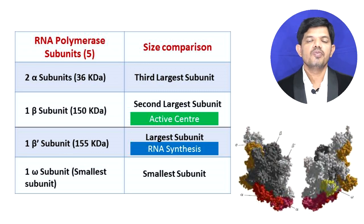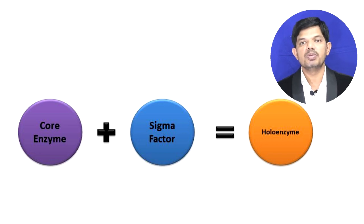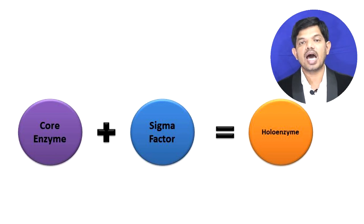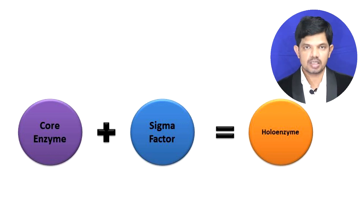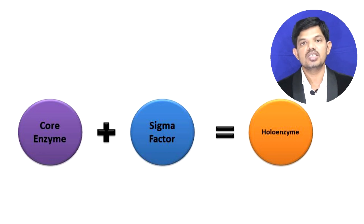These five different subunits form the core enzyme, and this core enzyme binds with a sigma factor to form the holoenzyme. The sigma factor helps during binding with the promoter region. Without the sigma factor, RNA polymerase cannot bind with the promoter region and therefore cannot start transcription. That is why the sigma factor is also known as the initiation factor.